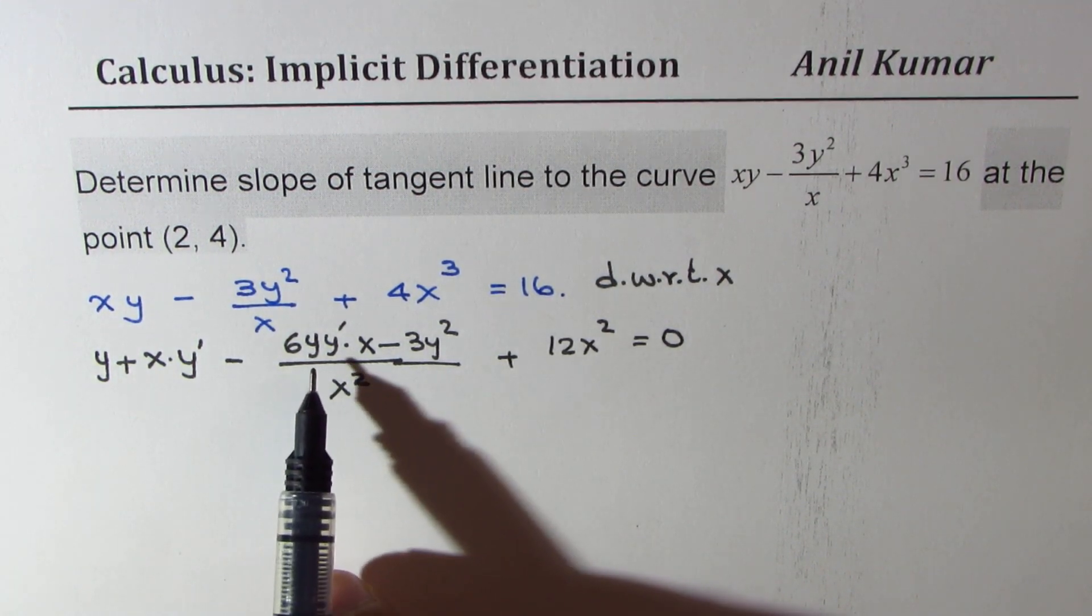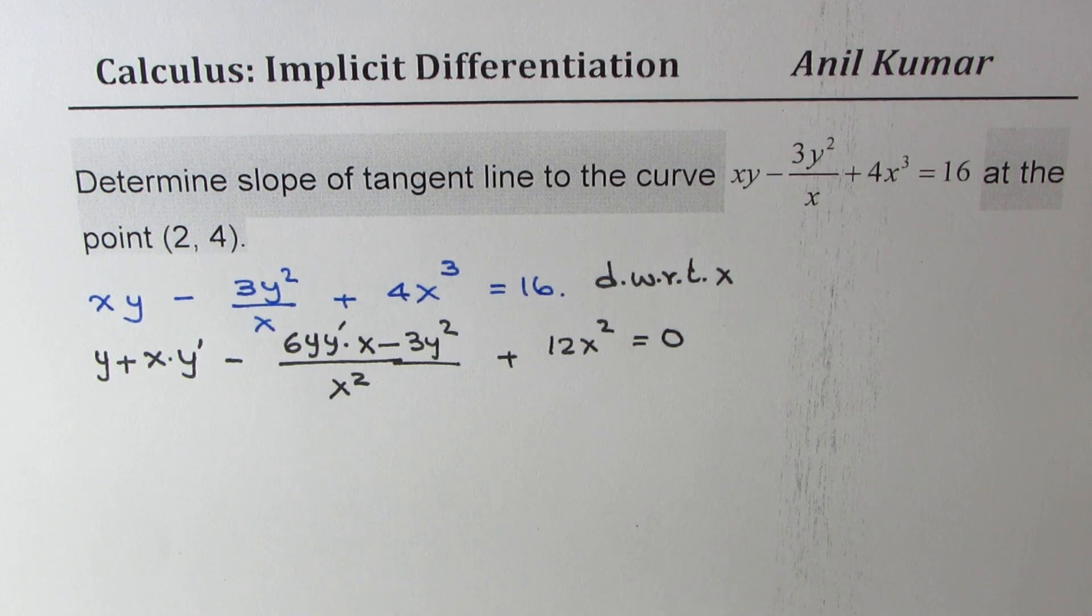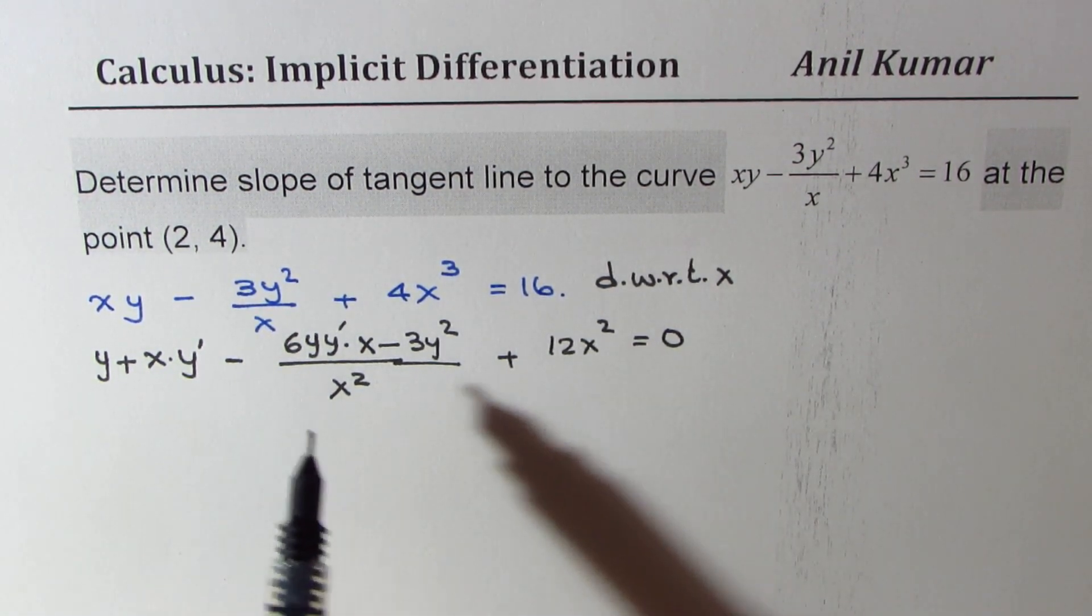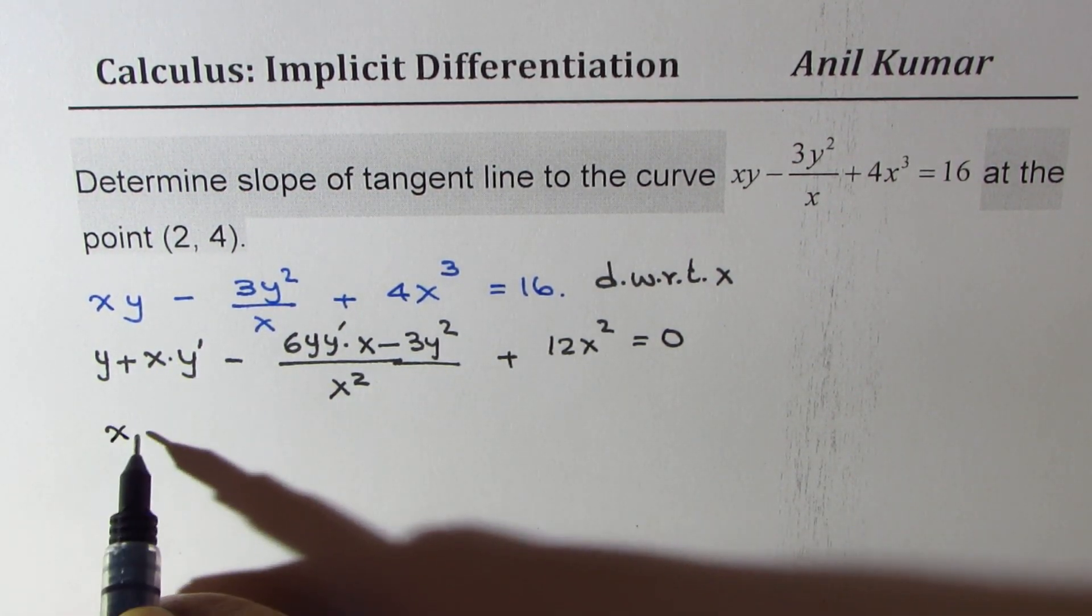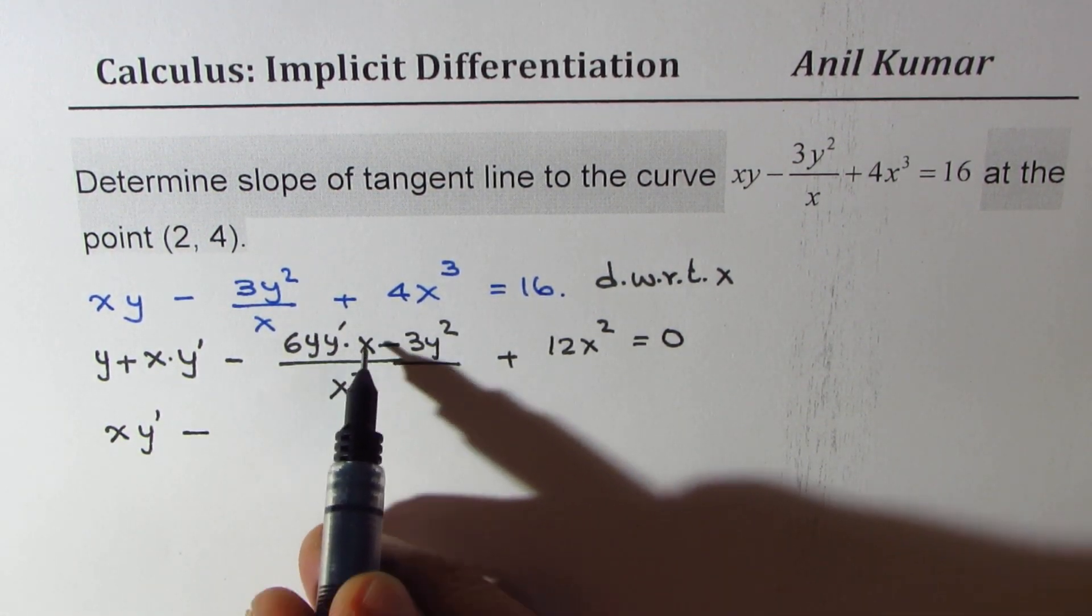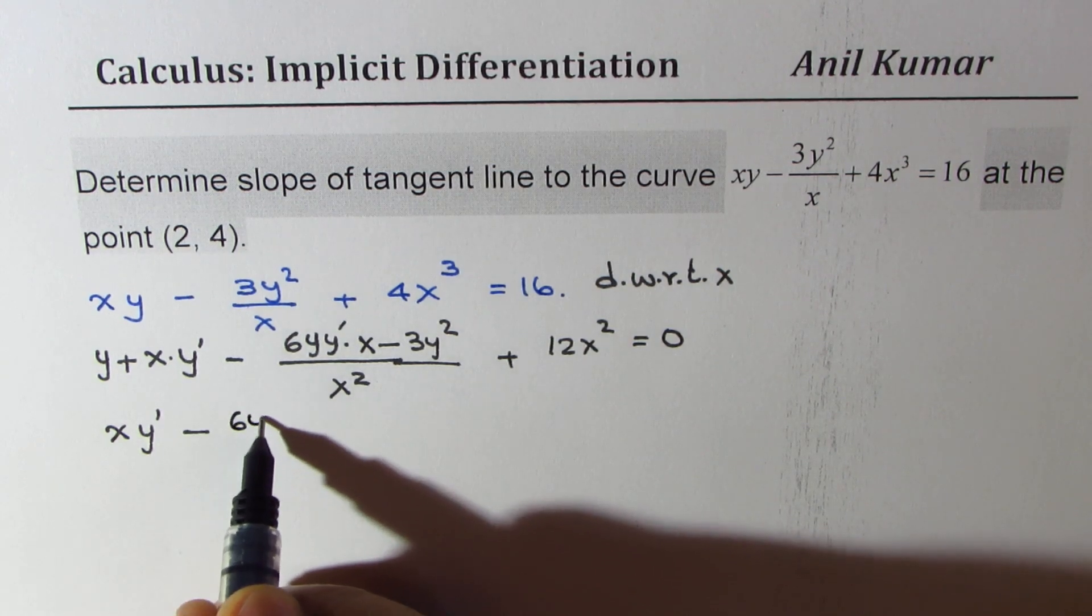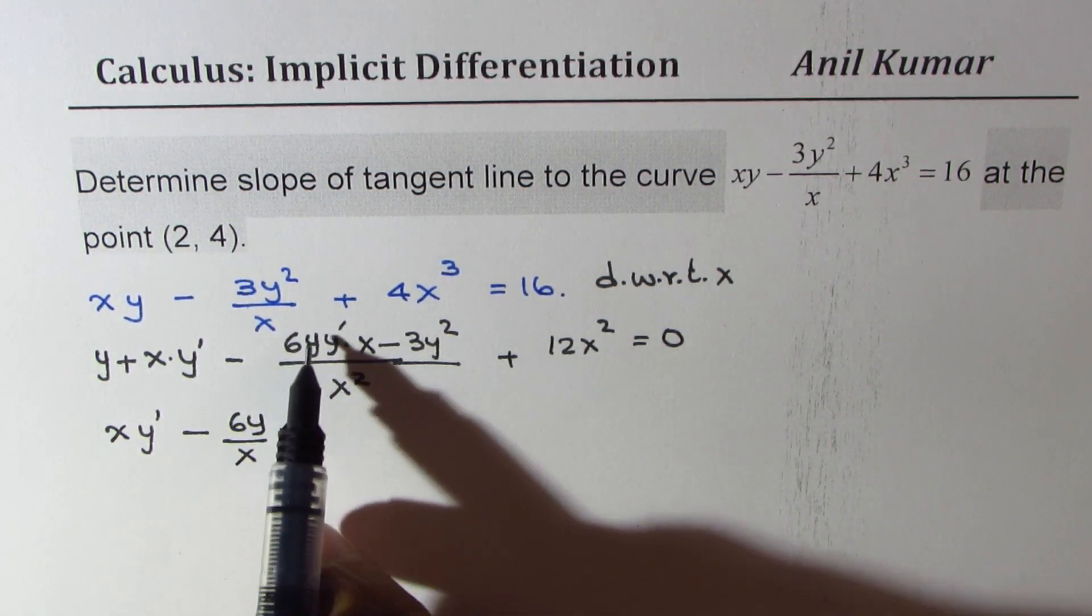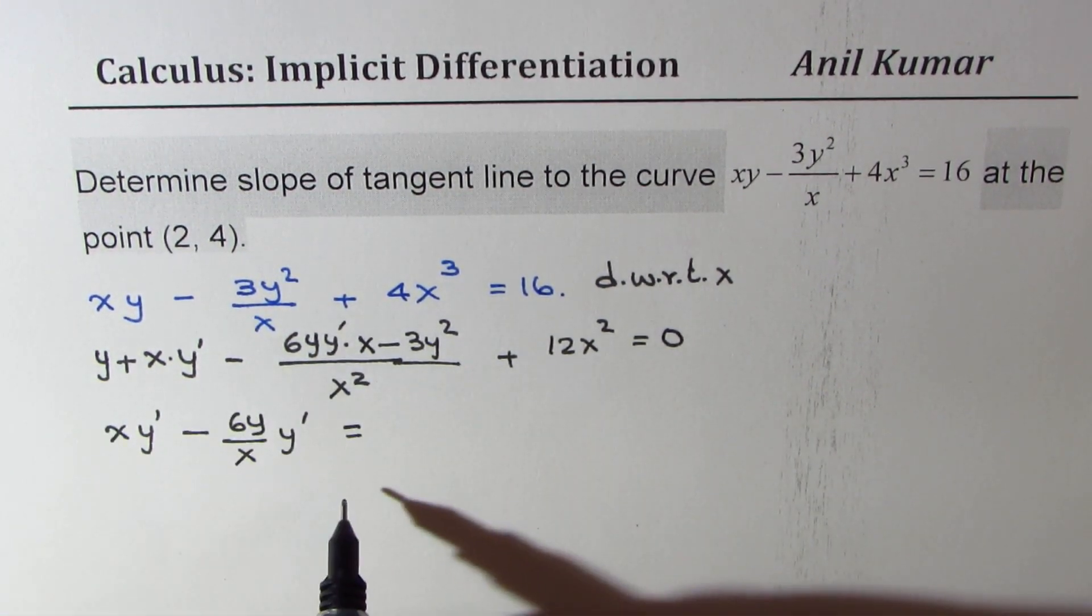Now we need to isolate y dash from here. Let me rewrite, taking all of the terms to the right side, and we are left with x y dash minus, here we get x square and x cancel, so we are left with x here, so we get 6y over x y dash. So these are the two terms with dy dx.